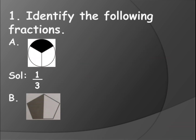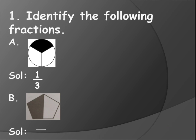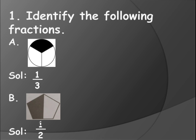Let me show you the next one. So here you have a pentagon which is divided into two parts - one, two, two parts. Then the denominator will be two here. And how many parts are colored? Only one part - only this part has been colored, so you will write in the numerator one. So in this way you need to write the fraction. A fraction has two parts: numerator and denominator. Denominator is the number of parts a shape has been divided, and numerator is the number which shows how many parts are shaded or colored in that shape.